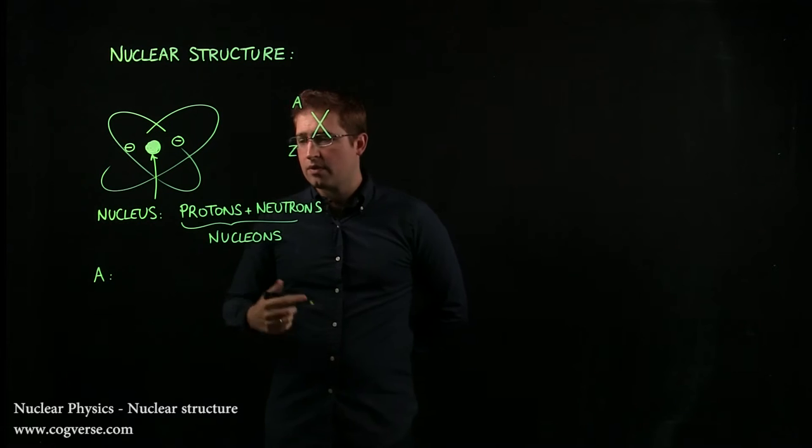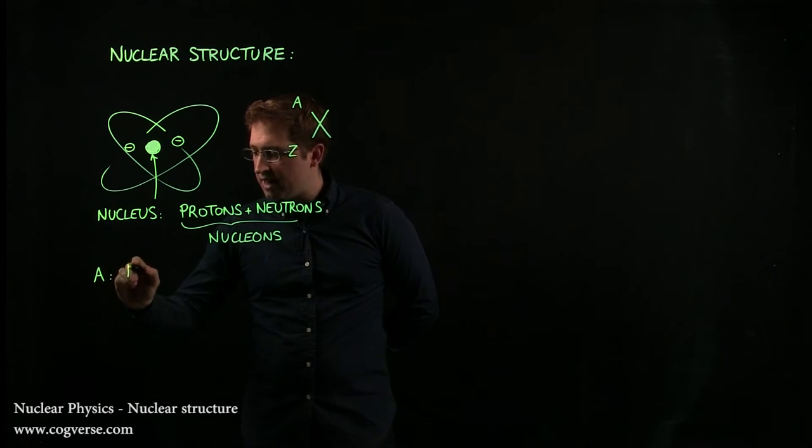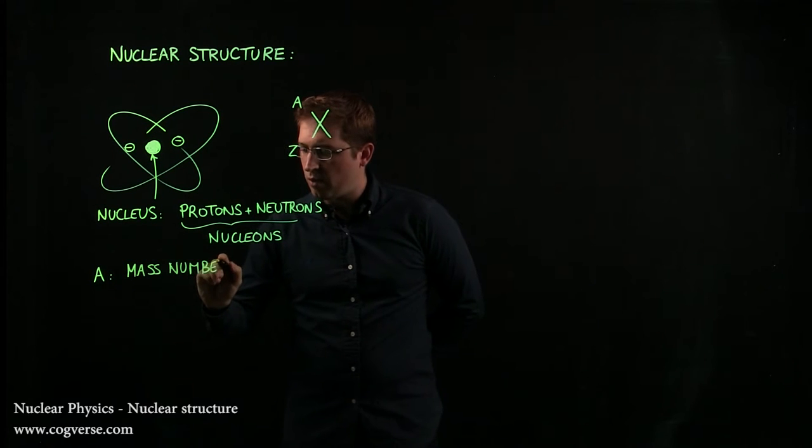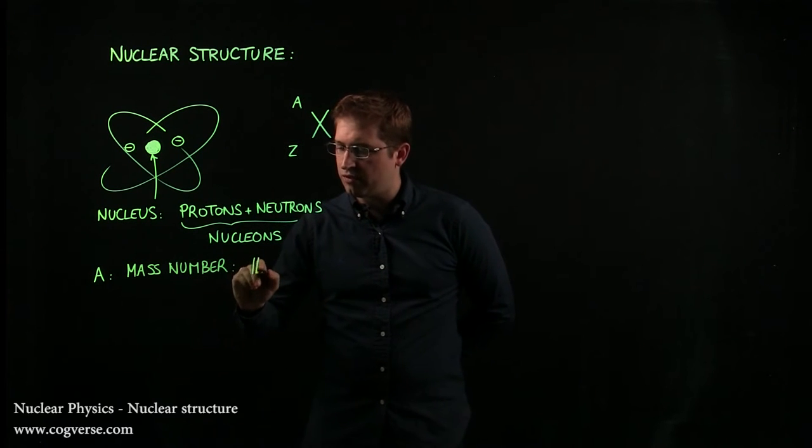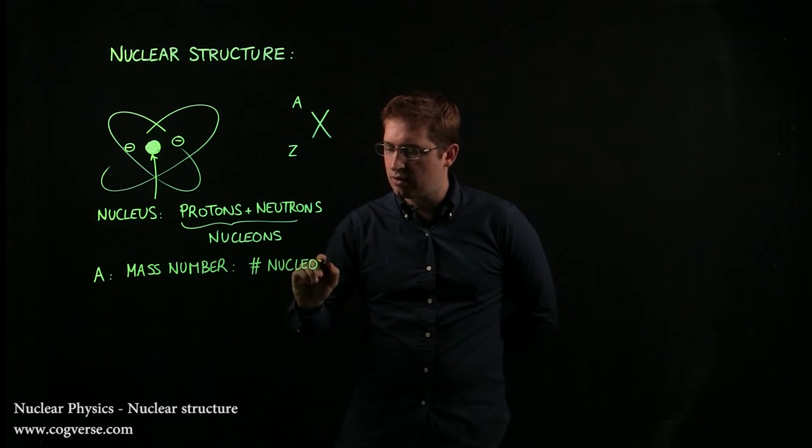So A is the mass number, and what A tells you is the total number of nucleons, so the total number of protons and neutrons.